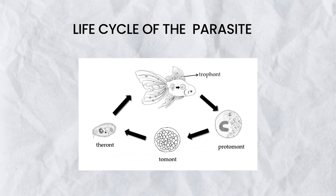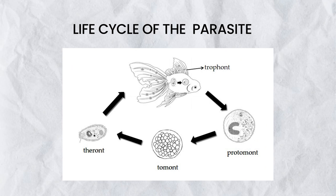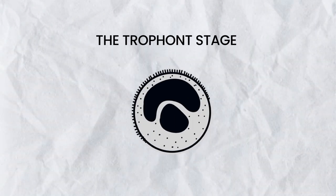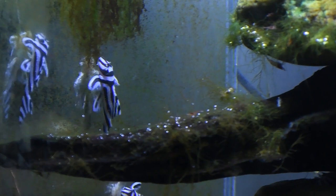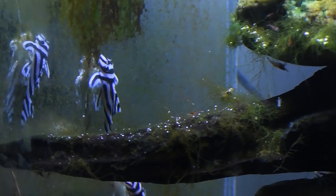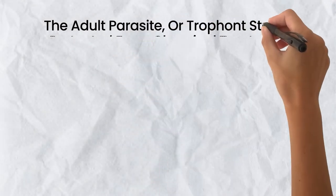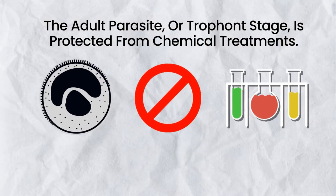Ichthyophtherius multifilius has a direct life cycle with three distinct stages. The first is the trophont stage — feeding on the fish. The infection is usually visible as one or several white spots on the body or fins. These white spots are single cells called trophonts, which feed on host cells — epidermal cells and leukocytes — and may grow to 1 mm in diameter. Because it is covered by the fish's epithelial tissue and mucus, the adult trophont stage is protected from chemical treatments.